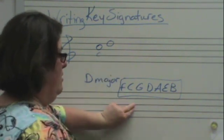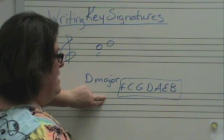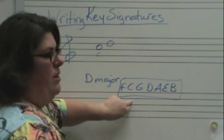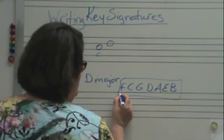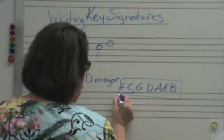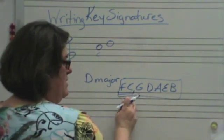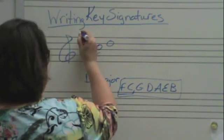I'm now going to go here and I'm going to start from this side and go over until I hit C. I'm going to have two sharps, F and C sharp.